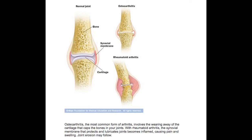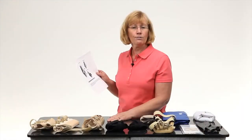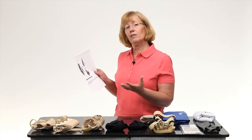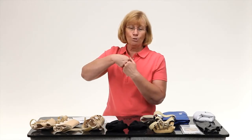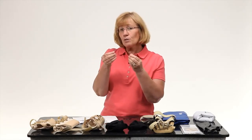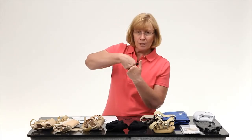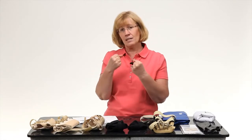Osteoarthritis is shown at the top of the handout. Osteoarthritis, which is the most common type of arthritis, involves the cartilage wearing down. As the cartilage wears down, you start to get bone on bone. You get bone spurs — little bony growths — and with that comes irritation, soreness, swelling, and pain when you try to move those joints. Osteoarthritis is also called the wear and tear arthritis.